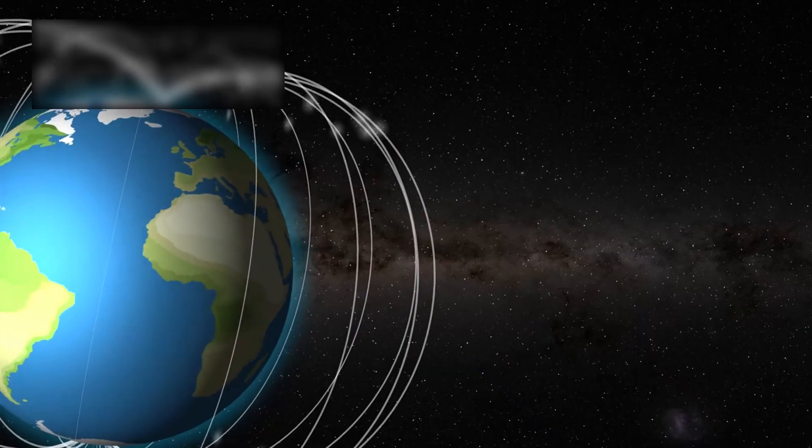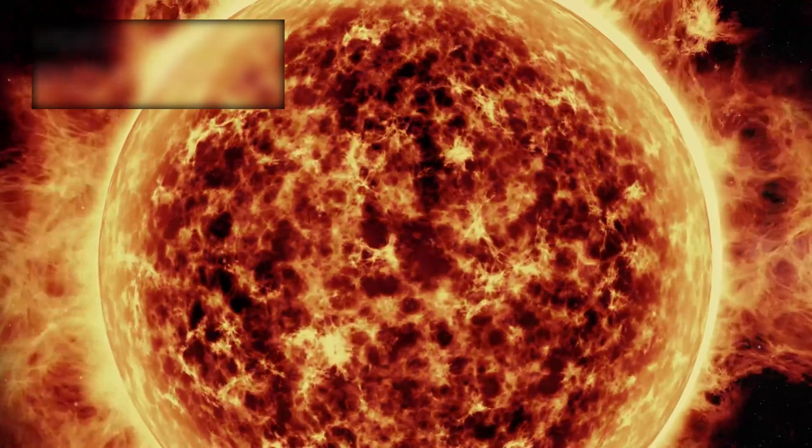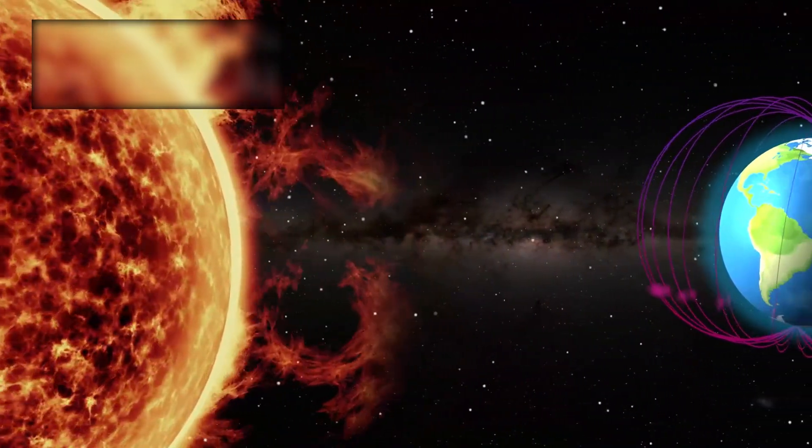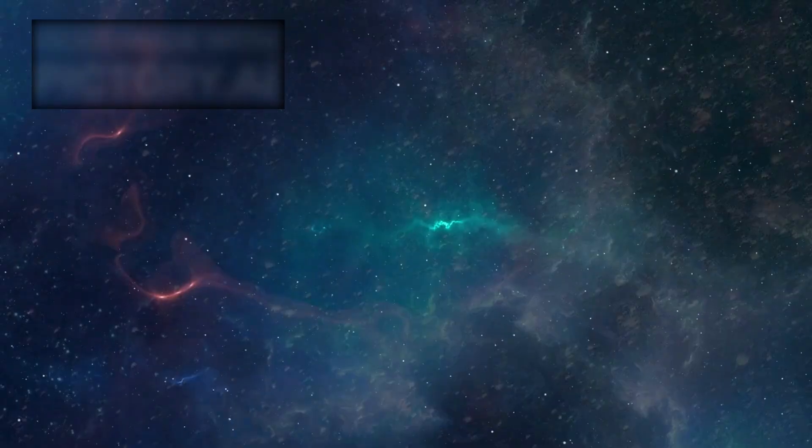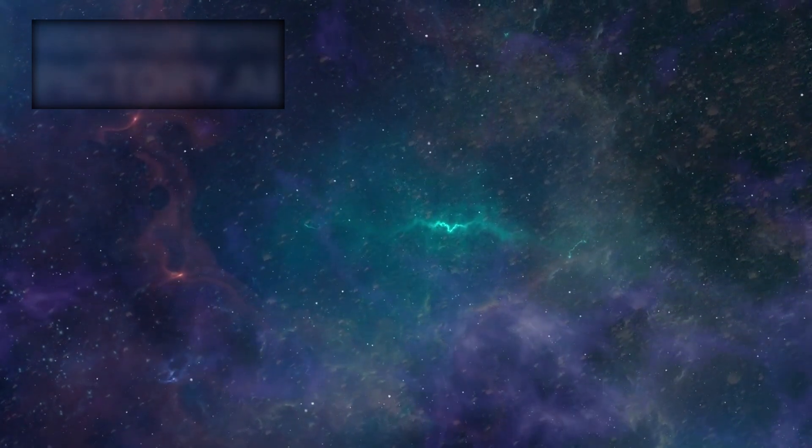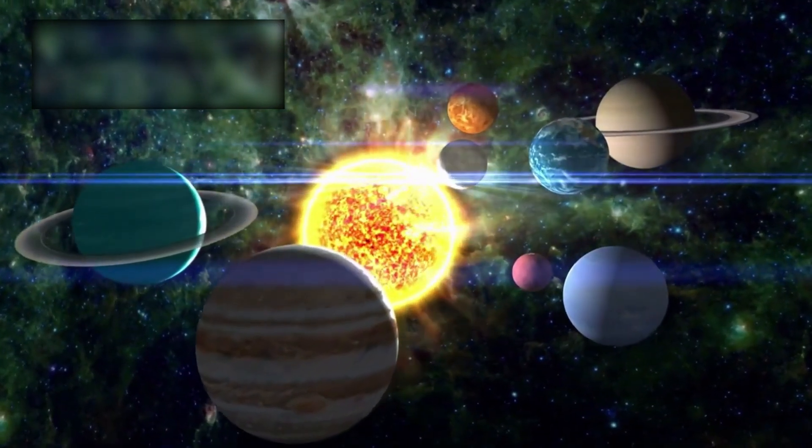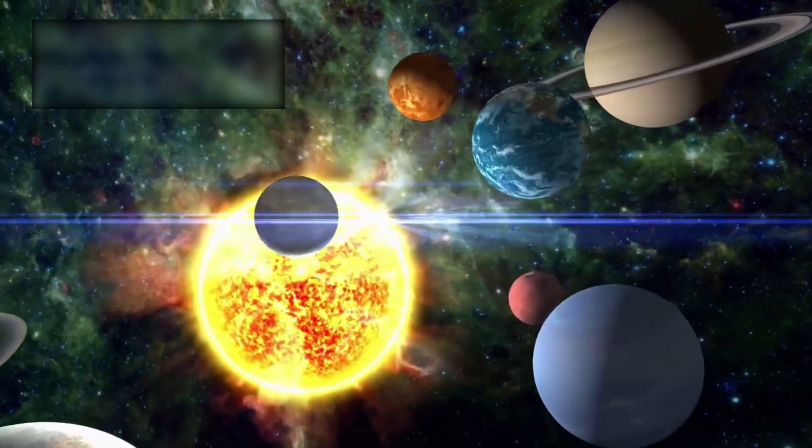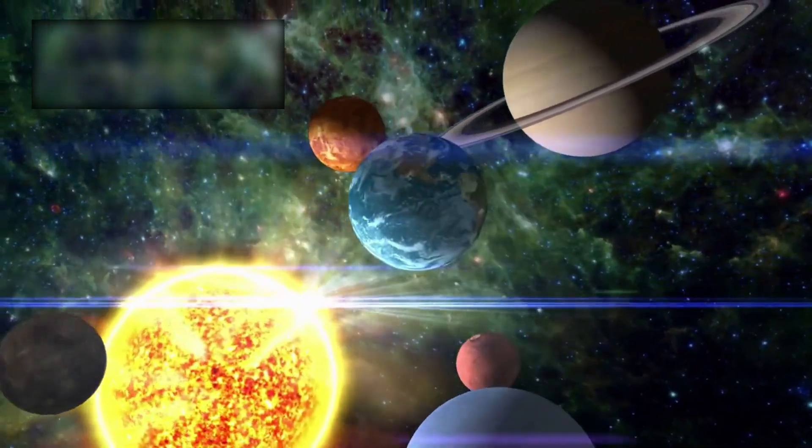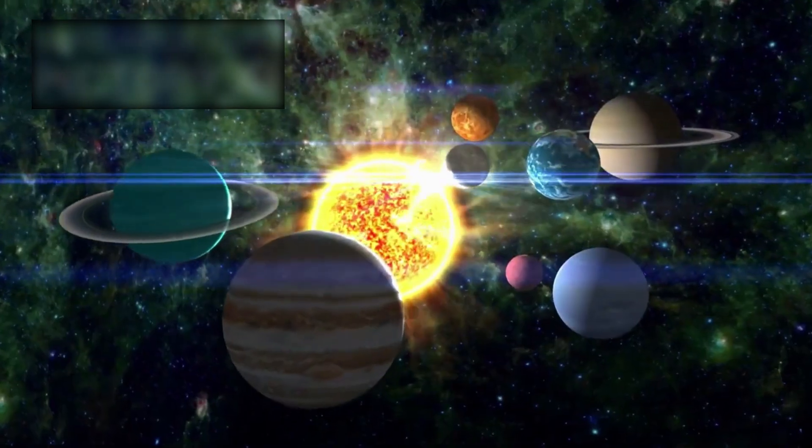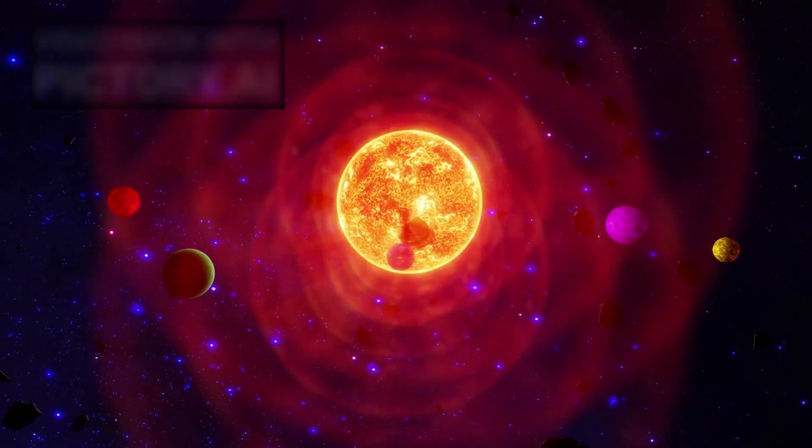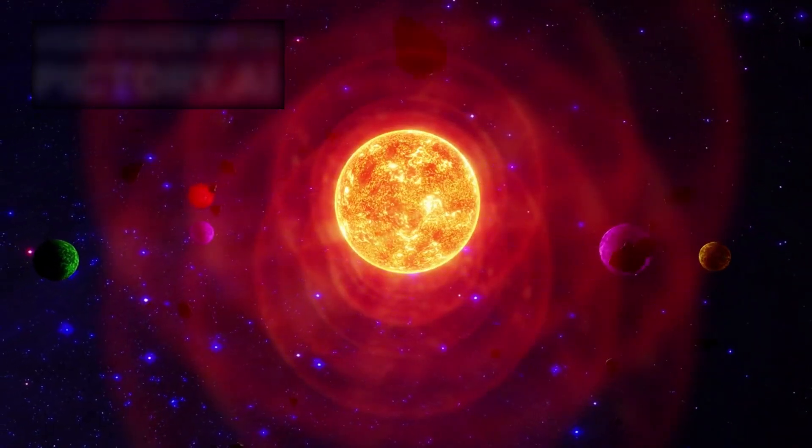Even more unnerving was the magnetic alignment. Instead of the turbulent chaos that models predicted, the galactic magnetic field and the sun's field were in near-perfect harmony at the boundary. It was too clean, too smooth, too organized. Two unsettling possibilities arose. Either the sun's outflow had shaped the region around it over aeons, sculpting the interstellar medium into this alignment, or the alignment was already there, baked into the fabric of this region of the galaxy. The second possibility is far more disturbing, because it suggests our solar system resides within a larger, pre-structured order—an order we barely understand.